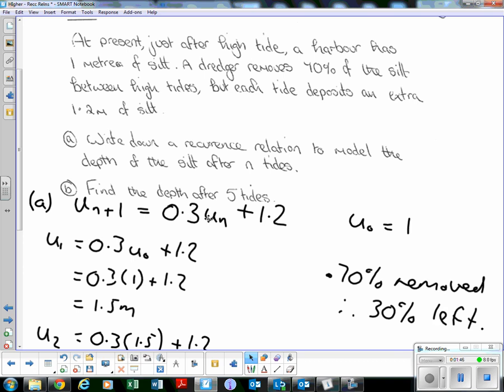On the next tide there'll be 30% of the last tide plus 1.2 meters, and that is the amount of silt we're working out. So that is our recurrence relation: u_(n+1) = 0.3u_n + 1.2, because it's linking the next tide to the last tide.